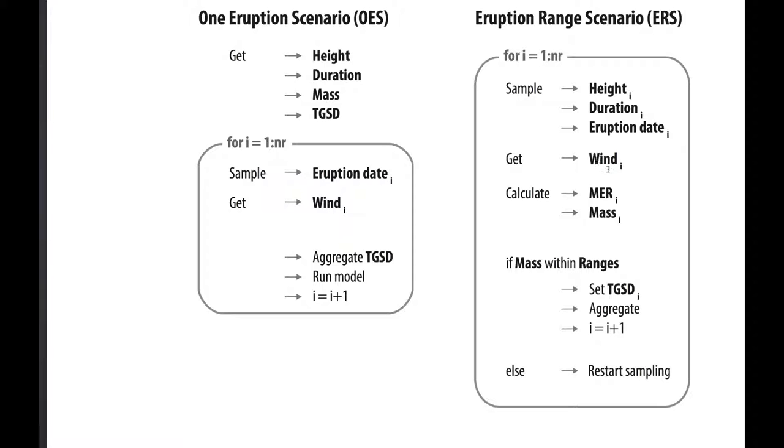We first sample the plume height, then a duration, then an eruption date. The eruption date helps us to retrieve the winds and using the formulation of Degruyter and Bonadonna for the mass eruption rates from the heights and the wind speed that we get from the eruption date, we can get the mass eruption rate. From the mass eruption rate and the duration we can get a mass.